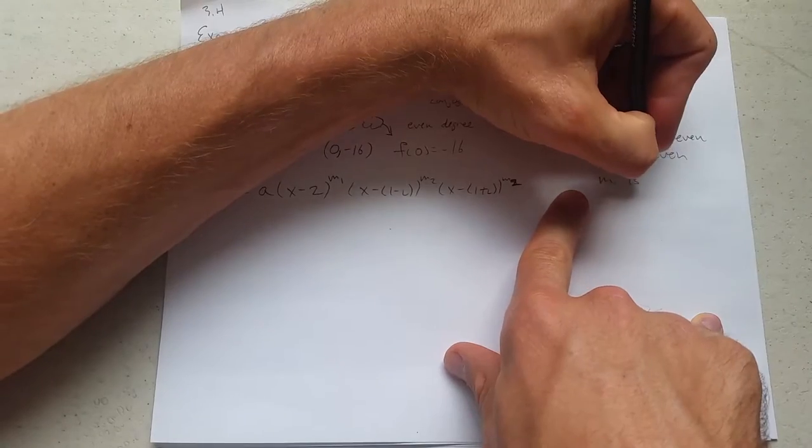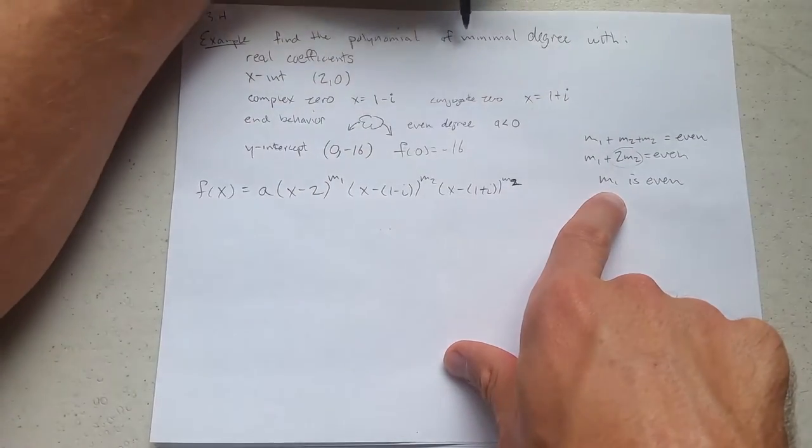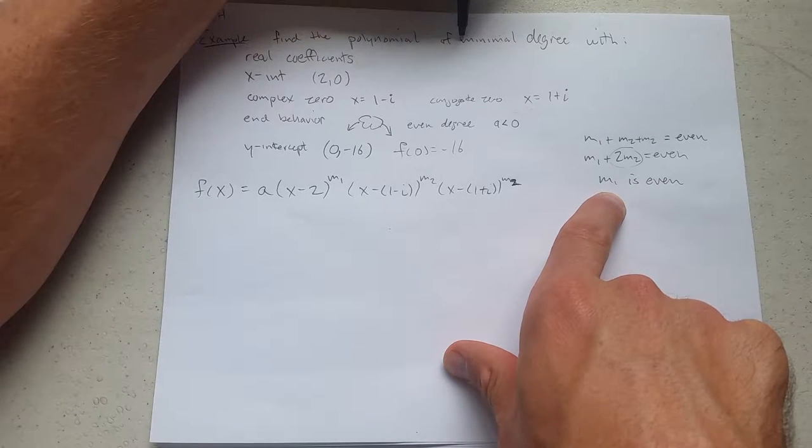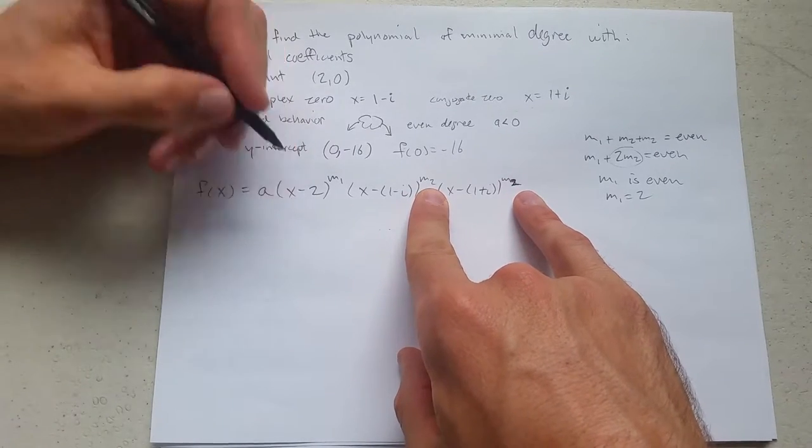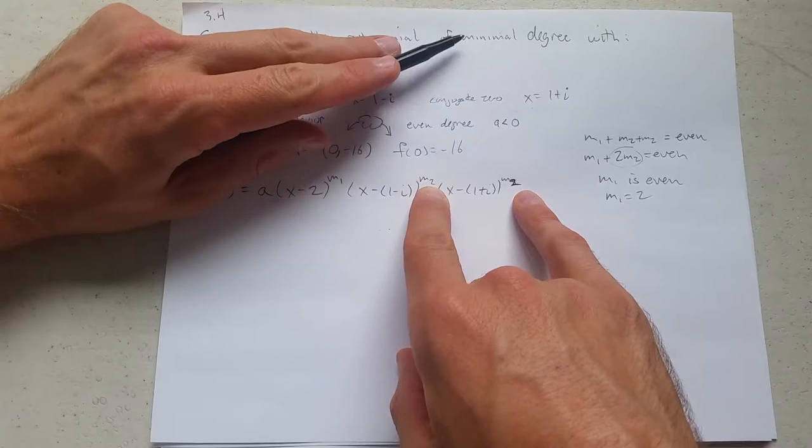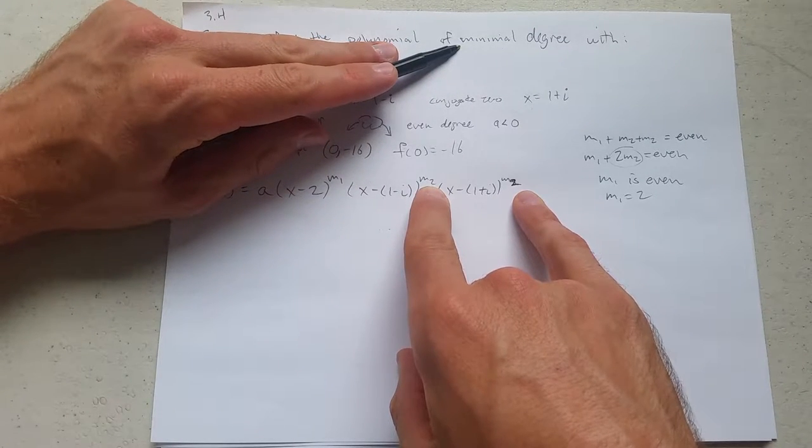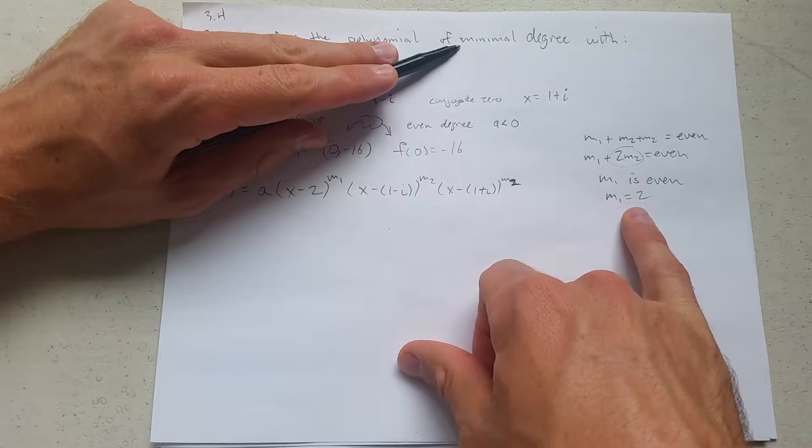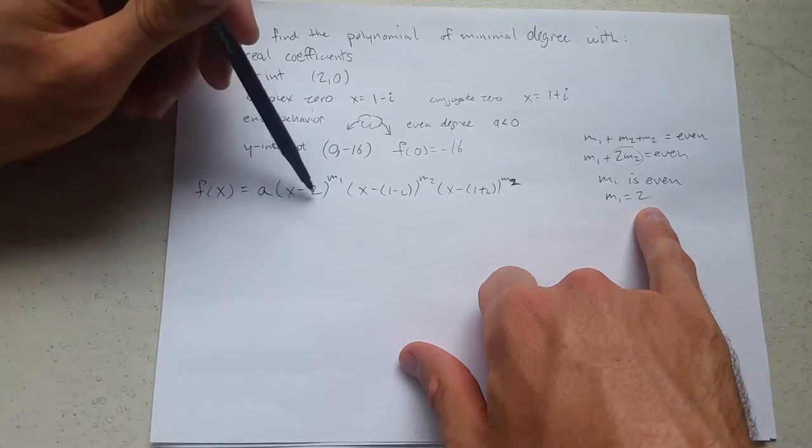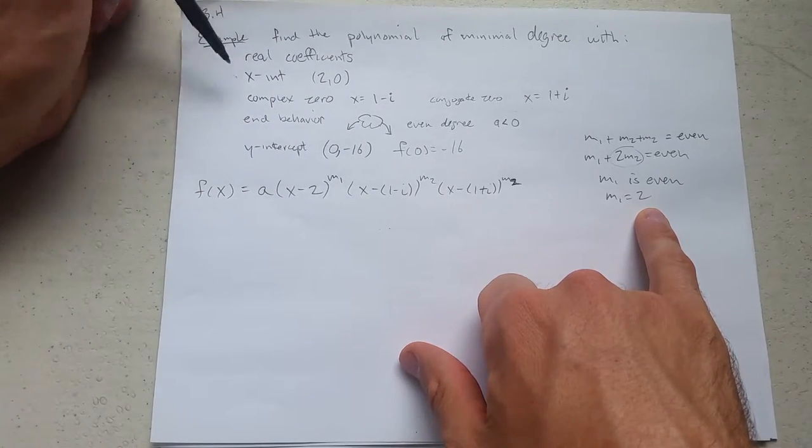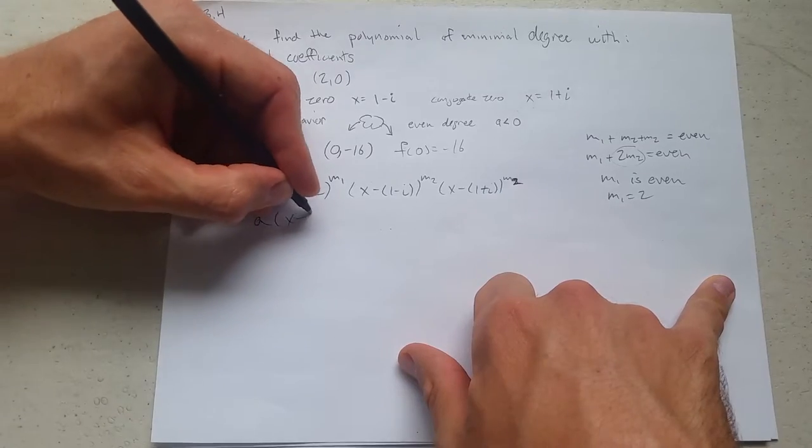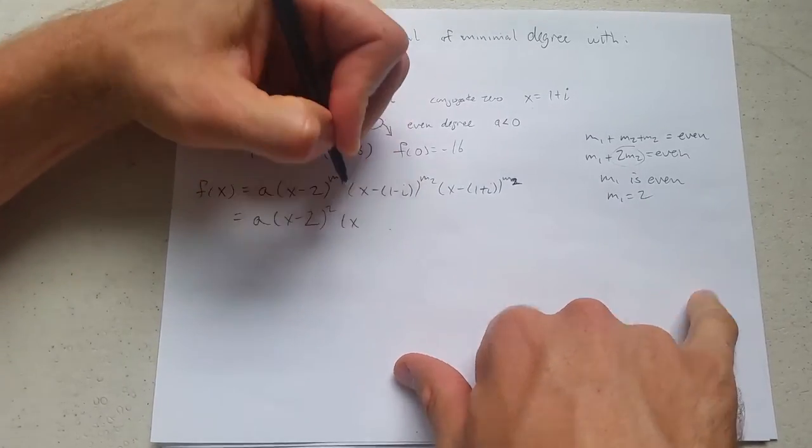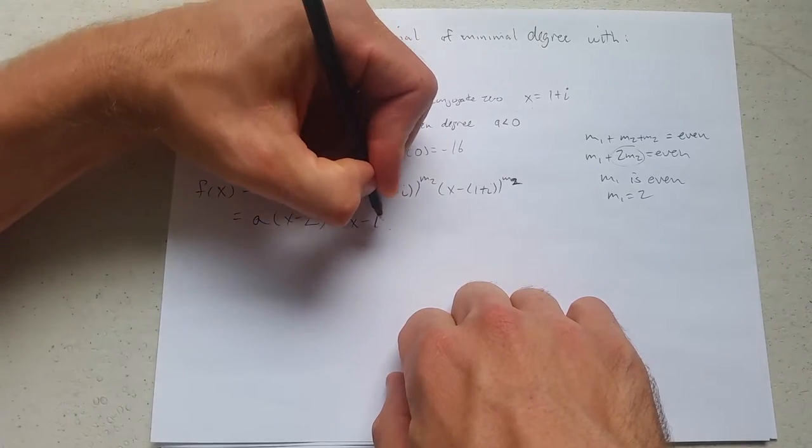We want to go minimal degree, so we will choose two. Could choose four, but I would not also then have minimal degree. And I'm going to choose m2 to both—both of these are going to be one. I could go with a higher degree, but when you get to choose, we want to choose the lowest one possible. Why is it not okay to choose m1 to be the even number zero? Because then we would lose this factor right here, and we would no longer have an x-intercept. So you can't go and choose zero here. It's too small.